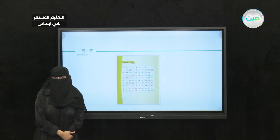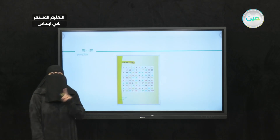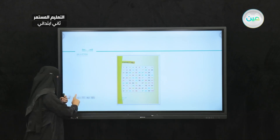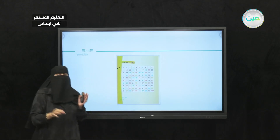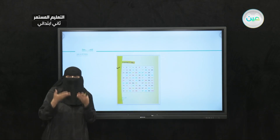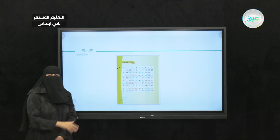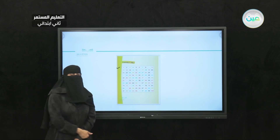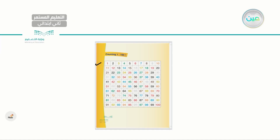Here we have the numbers — all the numbers, starting from number 1 till number 100. Numbers are very important. Let me start by reading the numbers, starting from number 1. I need you to read with me at your houses. Let's start: 1, 2, 3, 4, 5, 6, 7, 8, 9, and 10.